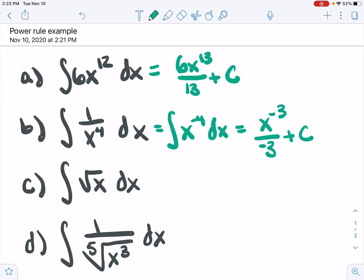And there we go. And maybe you want to rewrite that, maybe you want that to be negative 1 over 3x cubed plus C. Either way.